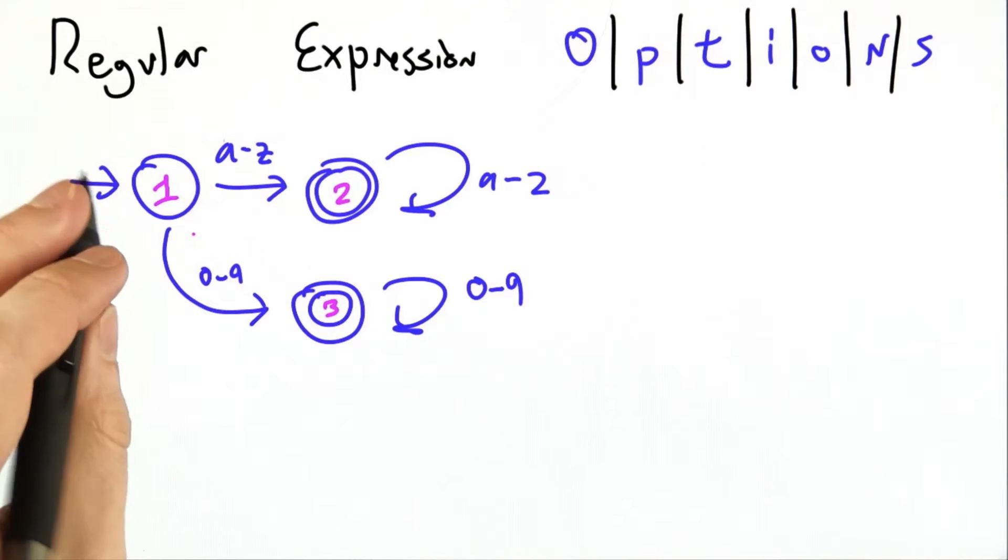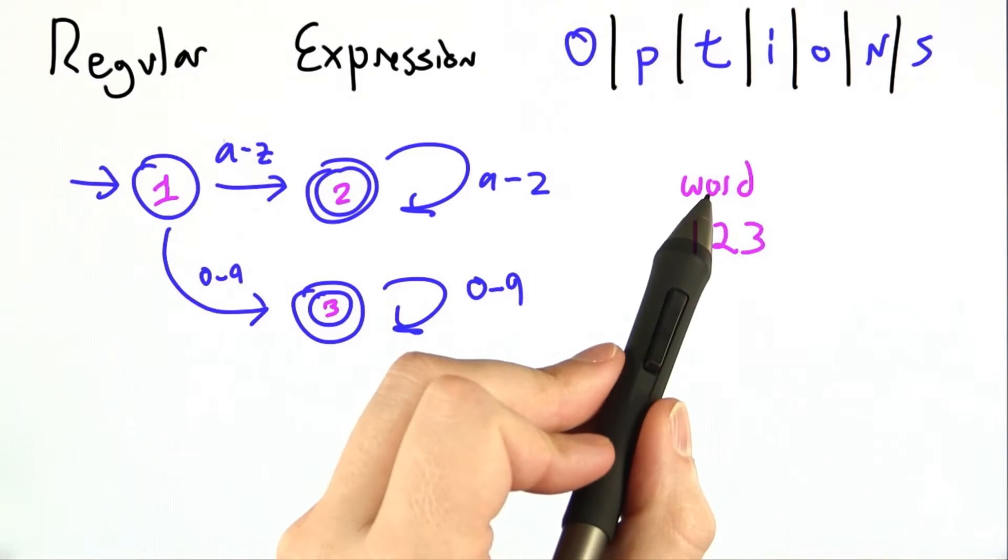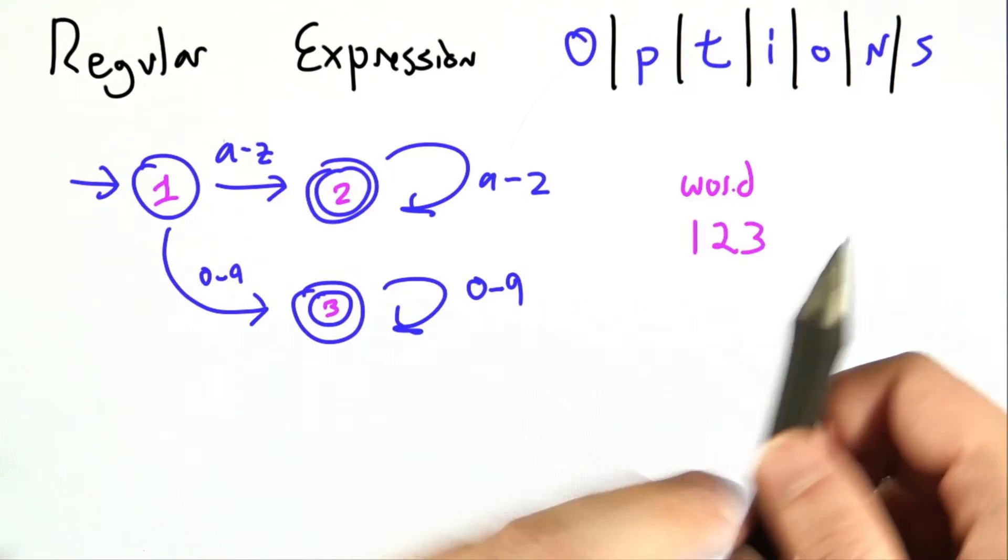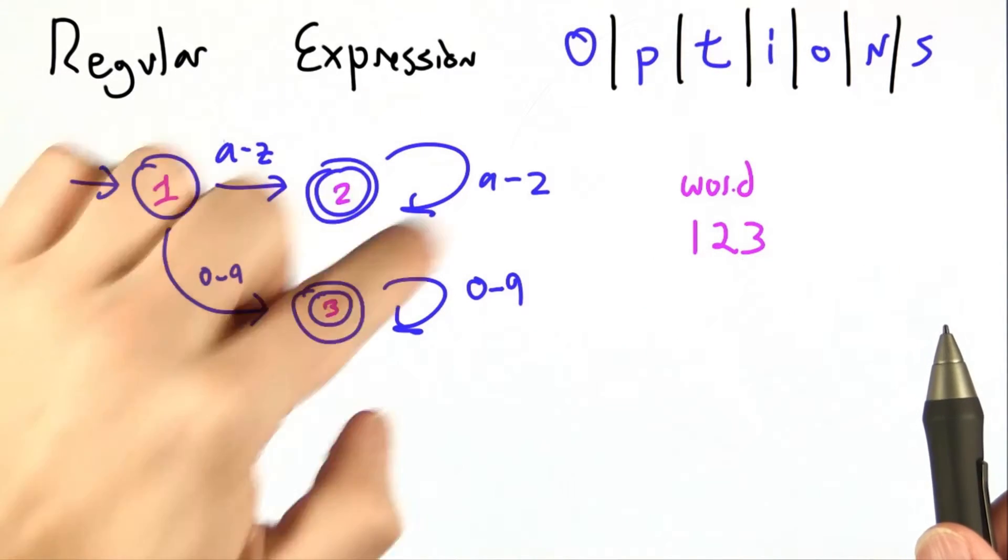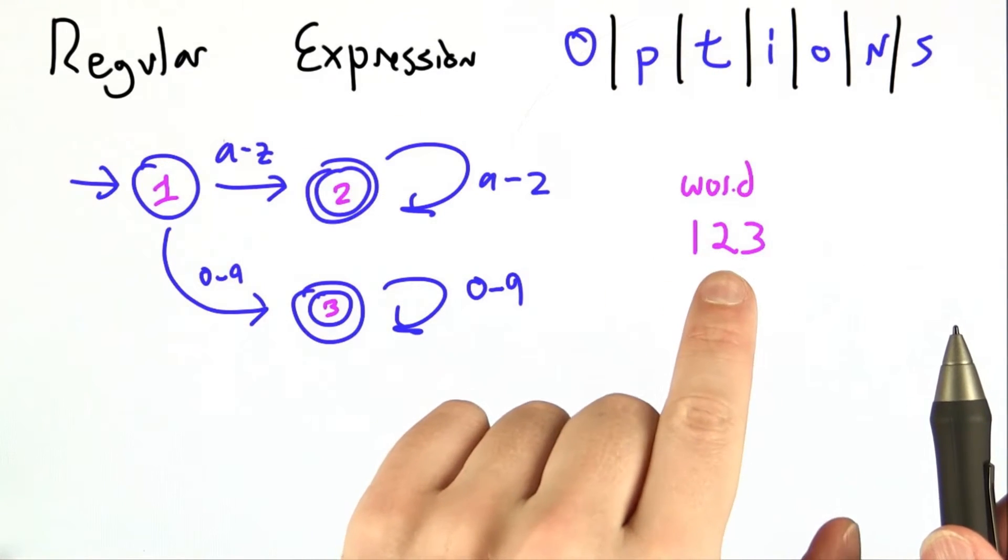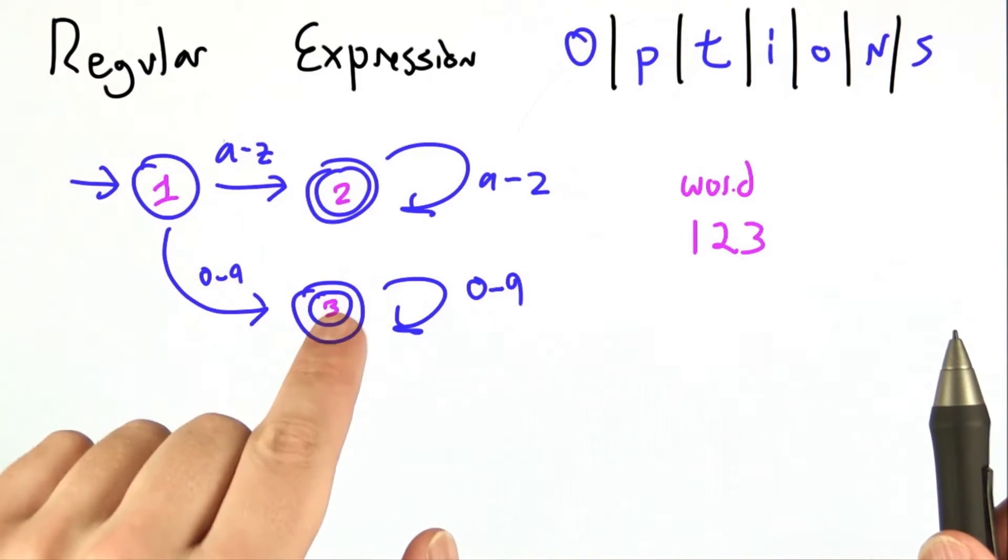Consider this spiffy new finite state machine. It accepts both one or more letters, like WORD, and also one or more digits, 1, 2, 3.